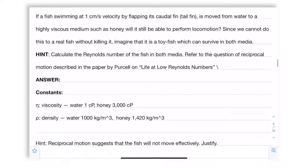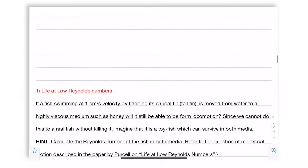So we're going to ask the question that if a fish is swimming at one centimeter per second by flapping its caudal tail fin, so by caudal tail I mean caudal fin, I mean this on my drawing. This is the caudal tail.